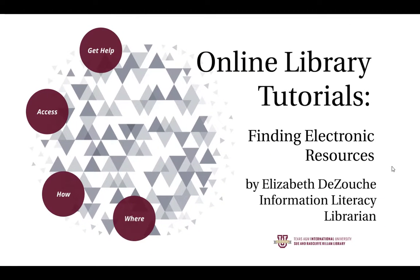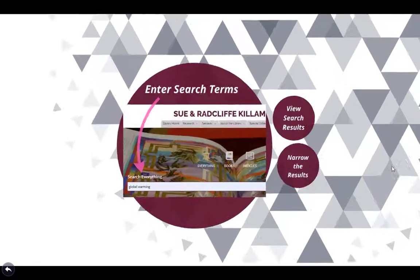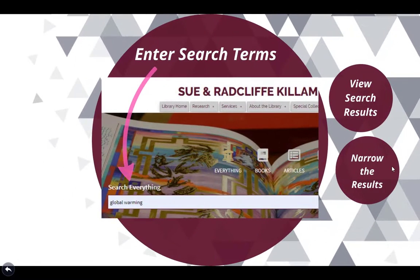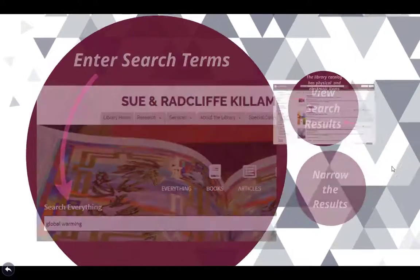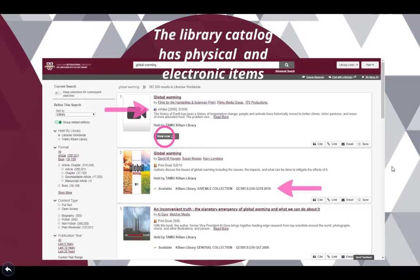Now we'll learn how to use the search box on the library website. Enter your search terms in the box and hit enter or click on the magnifying glass icon. The box you just searched is our library catalog — it contains our physical items as well as electronic resources.